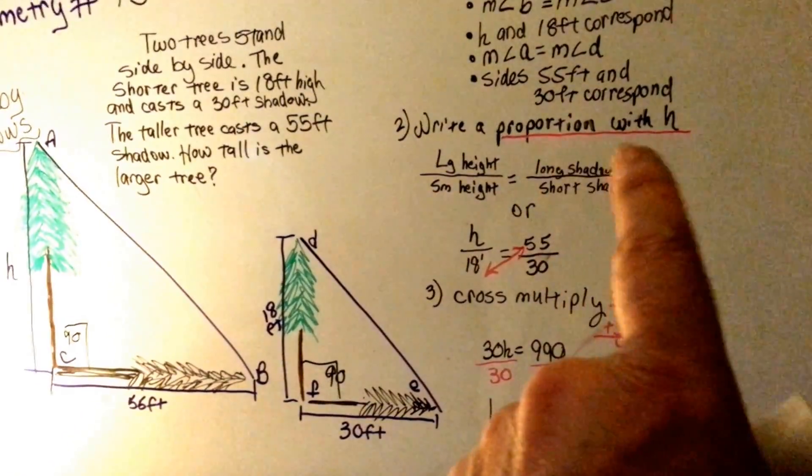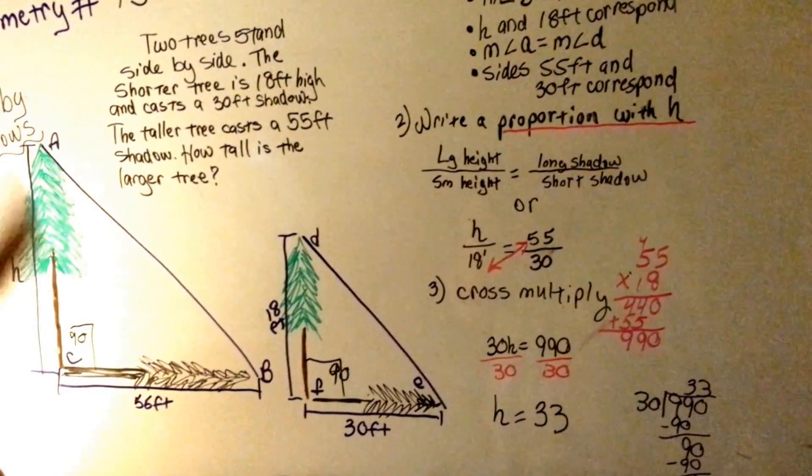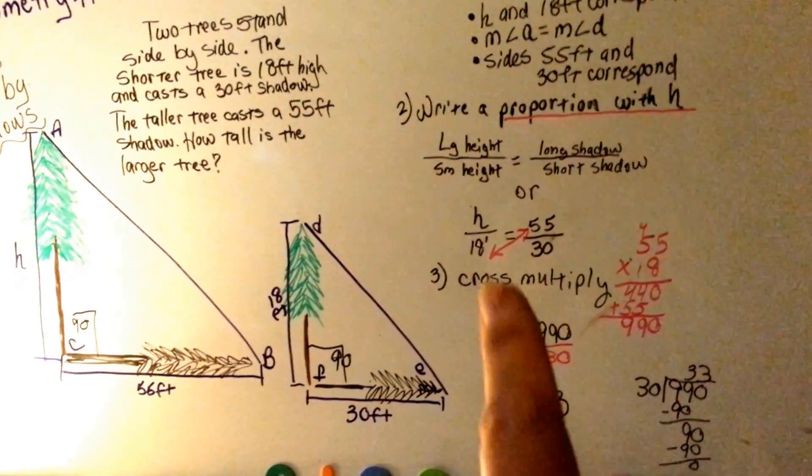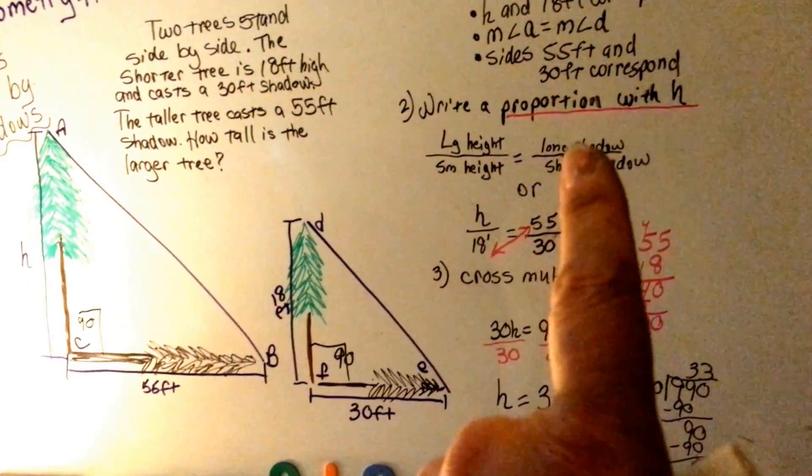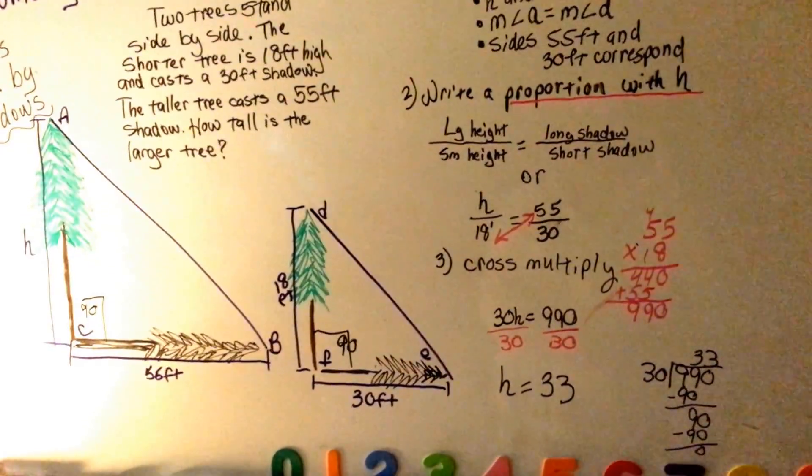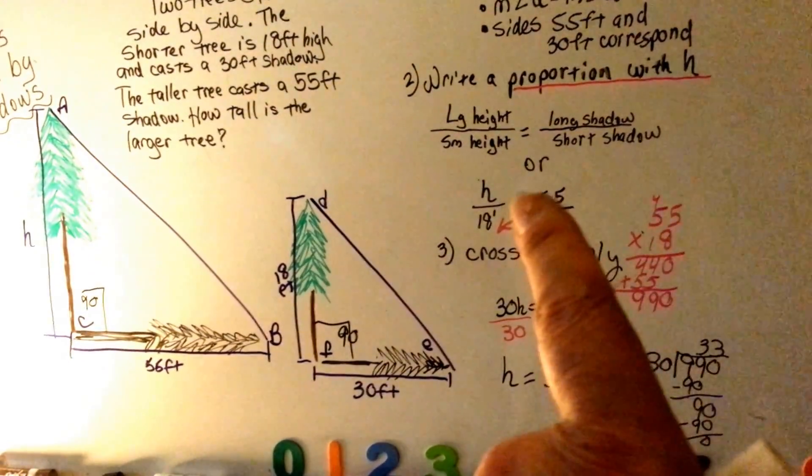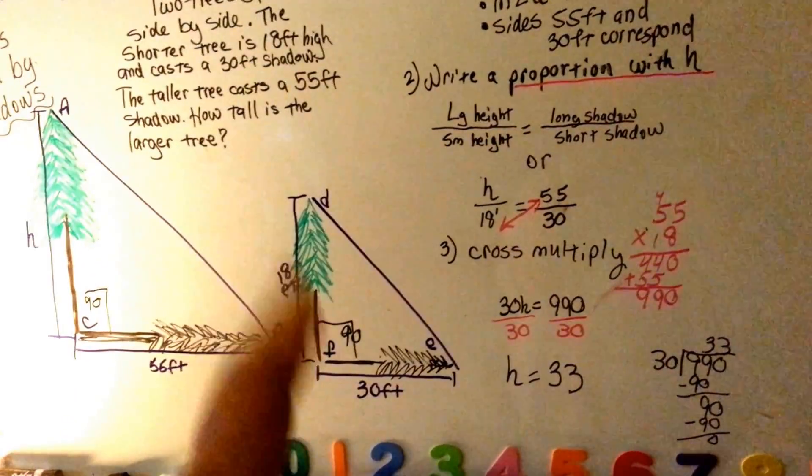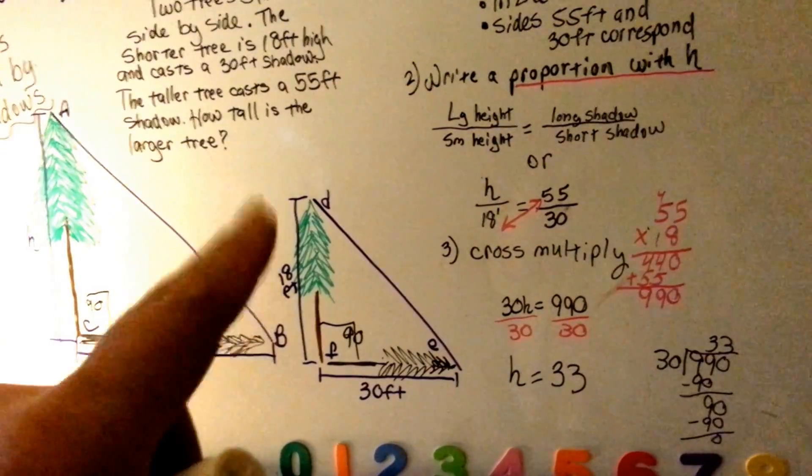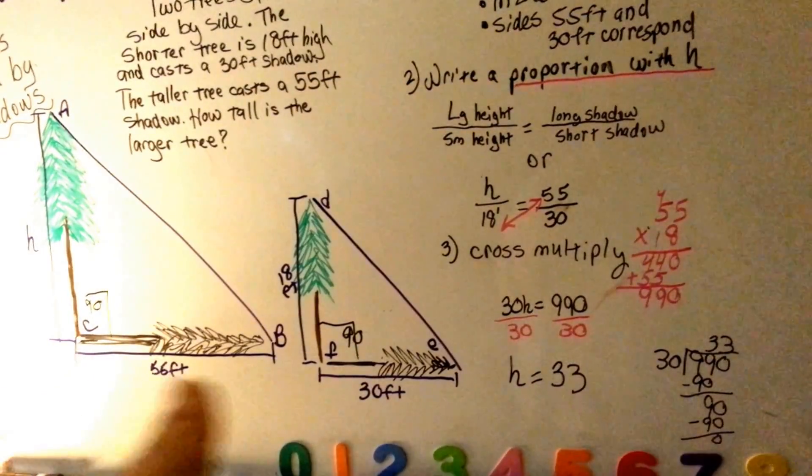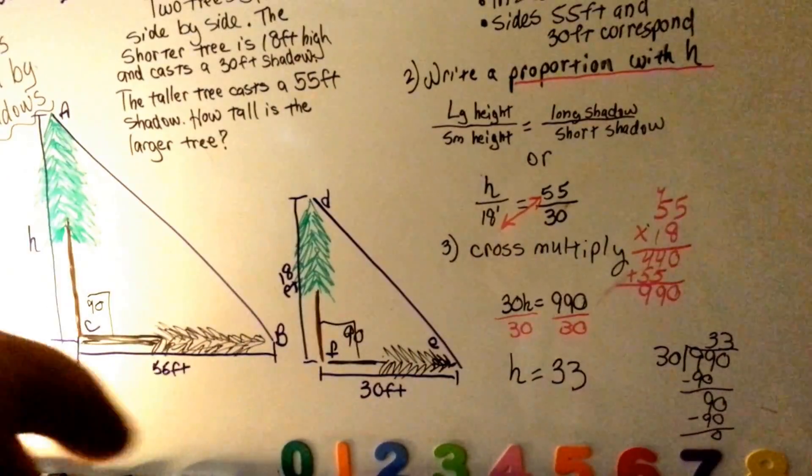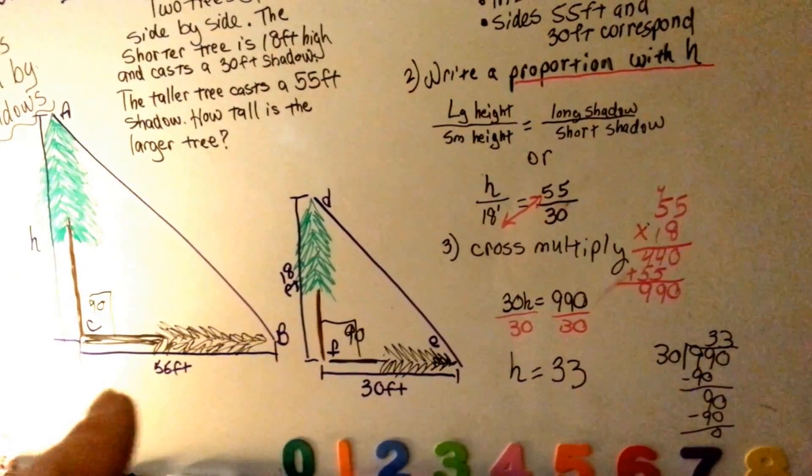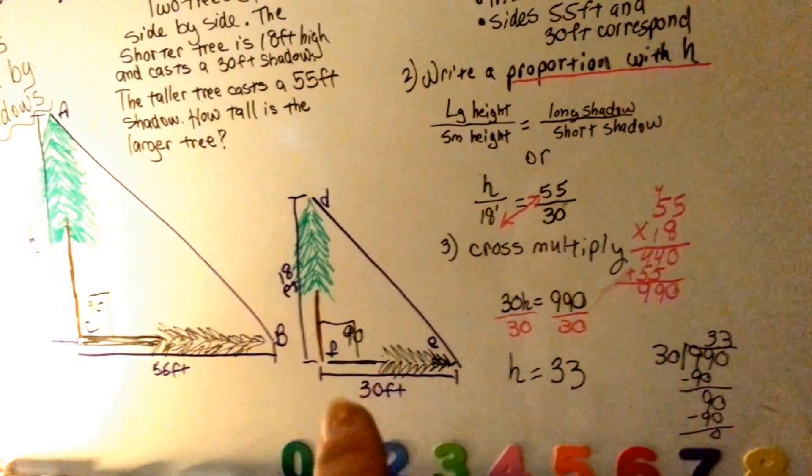So write a proportion with H, the height, to help solve it. We know the large height over the small height is equal to the long shadow over the short shadow. Or you can say H over the 18 feet, this over this is equal to this over this. So we've got height over 18 is equal to 55 over 30.